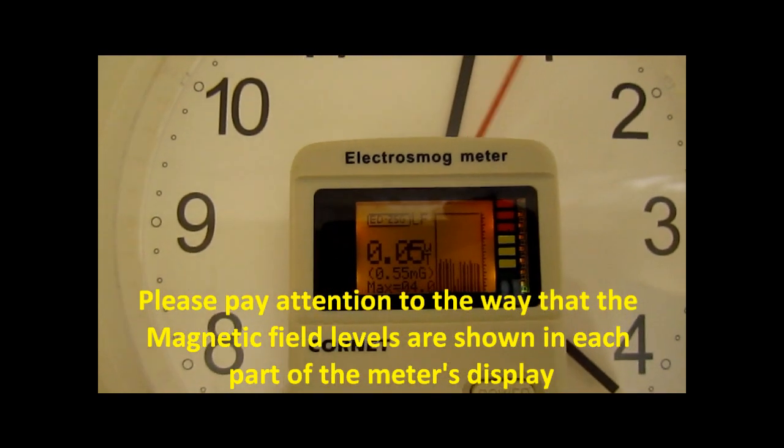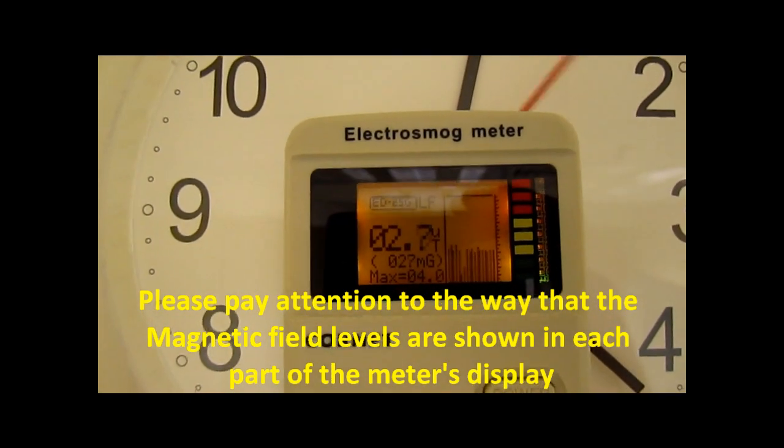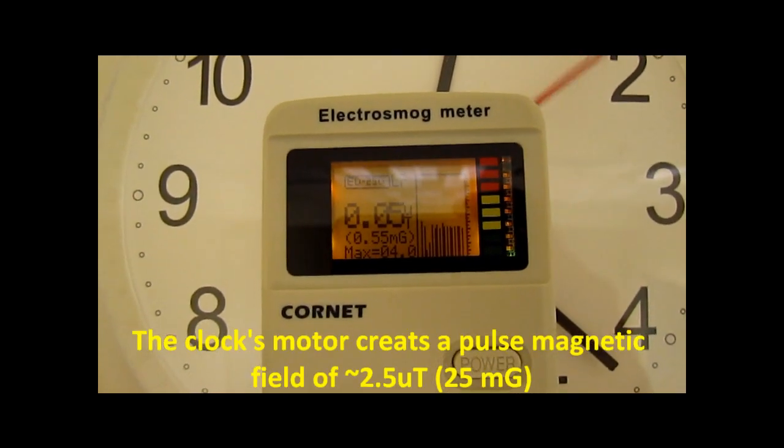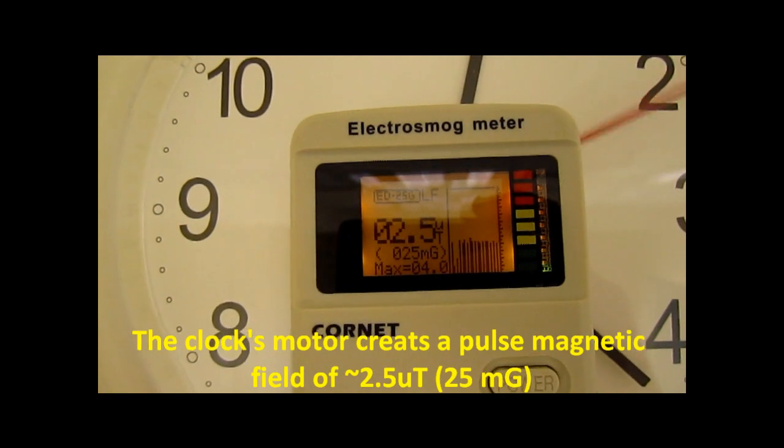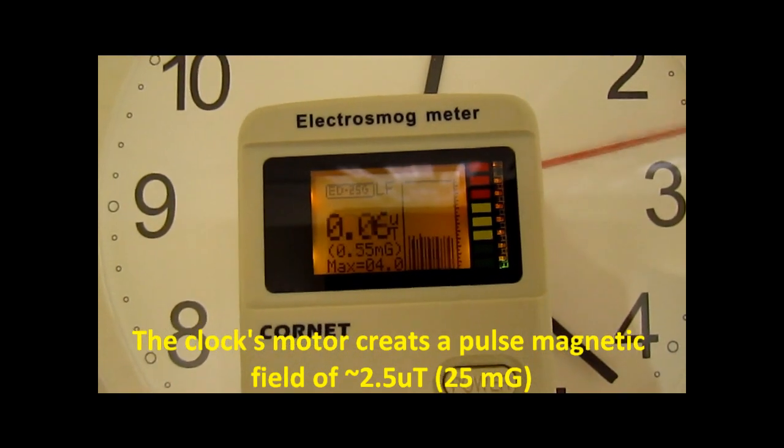The following measurement is in magnetic mode. Please pay attention to the way that the magnetic field levels are shown in each part of the meter's display. The clock's motor creates a pulse magnetic field of 2.5 microgauss which is 25 milligauss.